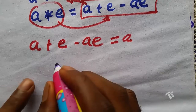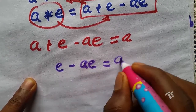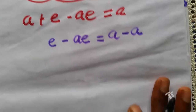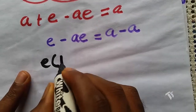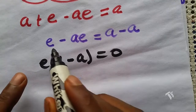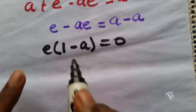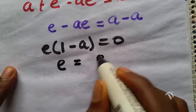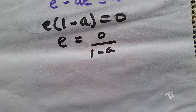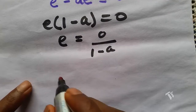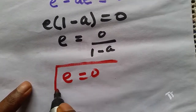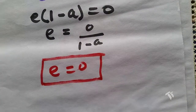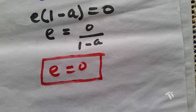Factorizing e out gives e(1 − a) = 0. Making e the subject, we get e = 0 divided by (1 − a), which equals 0. So the identity element under the operation star is 0.